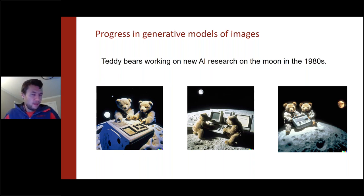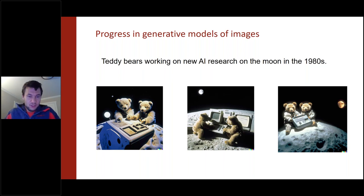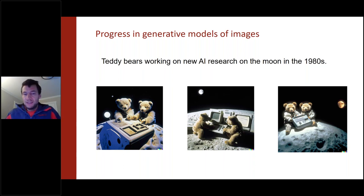Fundamentally, these models can take a caption — something like 'teddy bears working on new AI research on the moon in the 1980s' — this is from the DALL-E 2 system — and synthesize an image faithful to that caption. Presumably this kind of image does not exist on the internet, so the models are not simply regurgitating what they've been trained on.